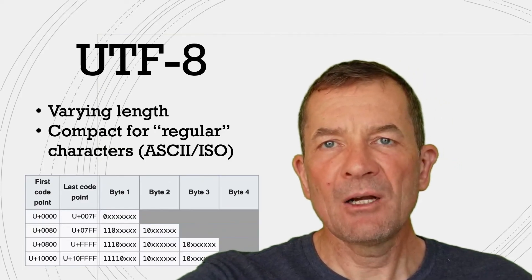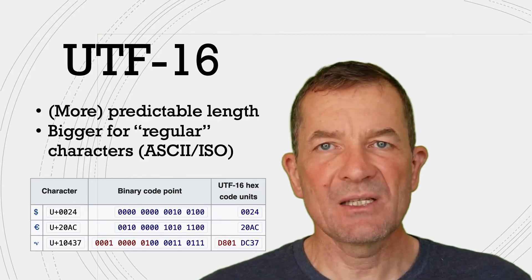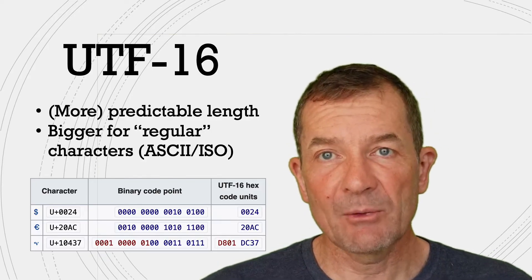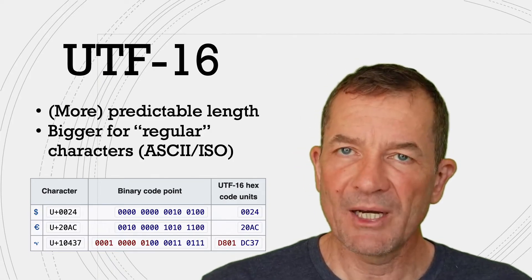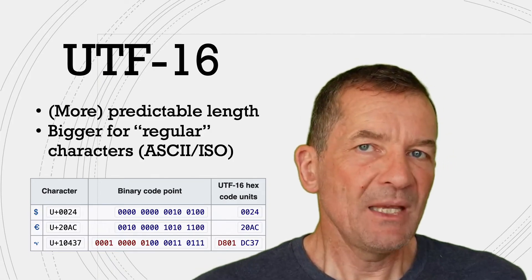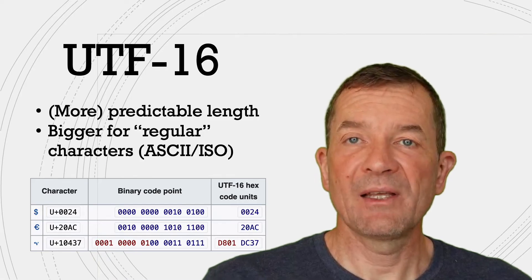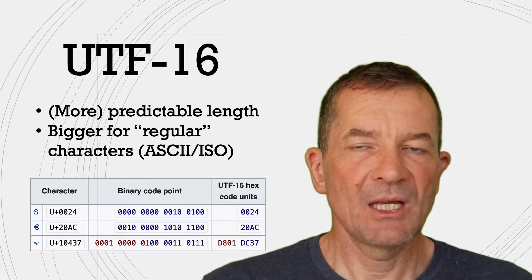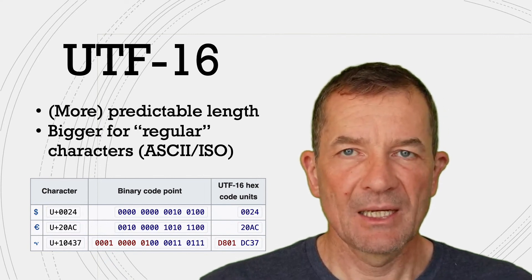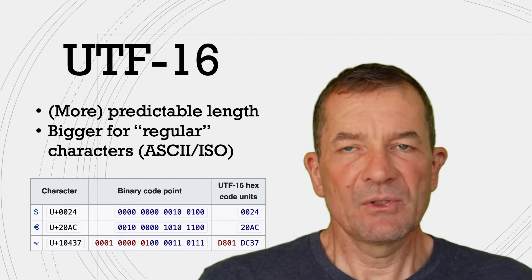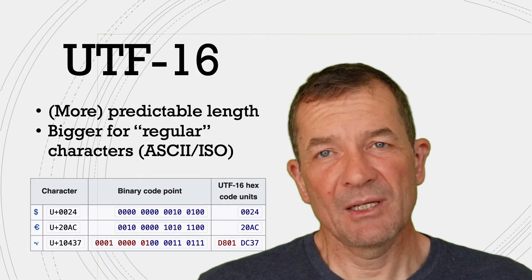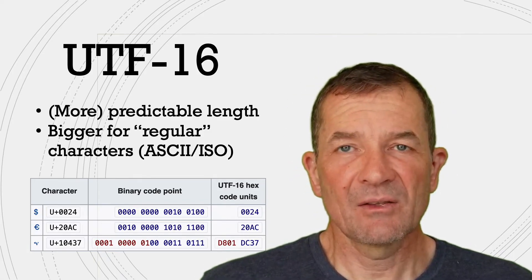Now you can contrast this with UTF-16, and in UTF-16 what you have is a more predictable way how characters get encoded because most get encoded in two bytes, but that means that they need twice as much space. So even ASCII characters get encoded as two bytes, meaning that they just take up much more space. So the advantage of UTF-16 is that it's less complex, it's a little bit more predictable in terms of the length of the text that you produce.